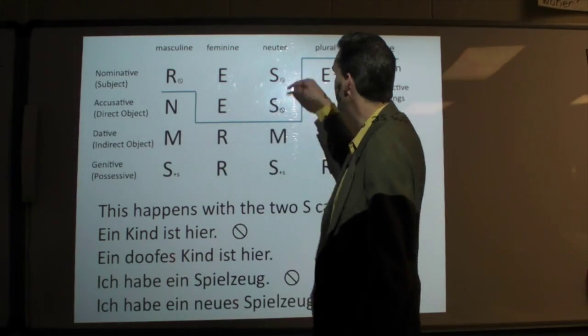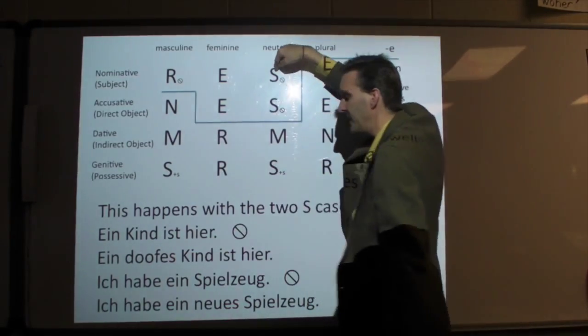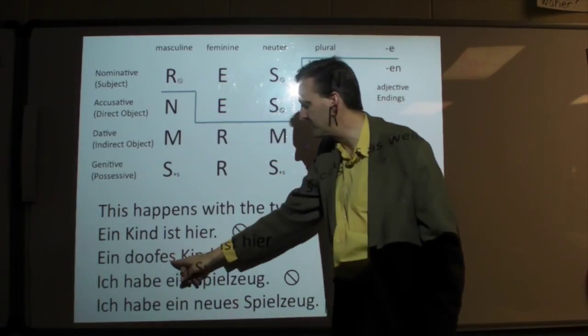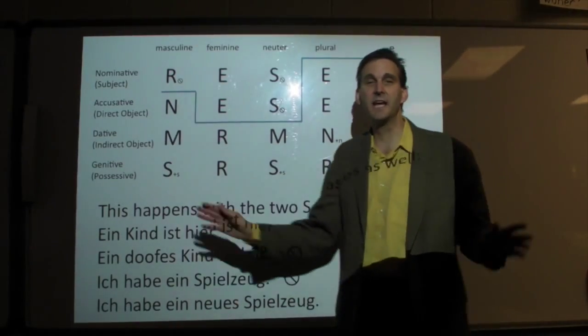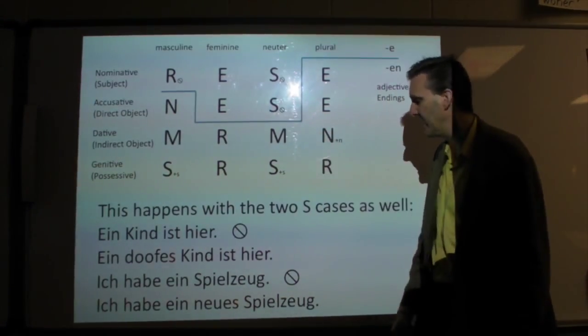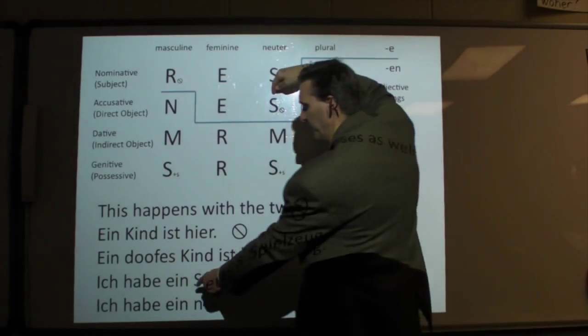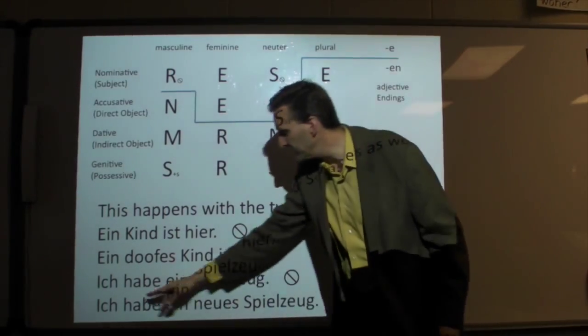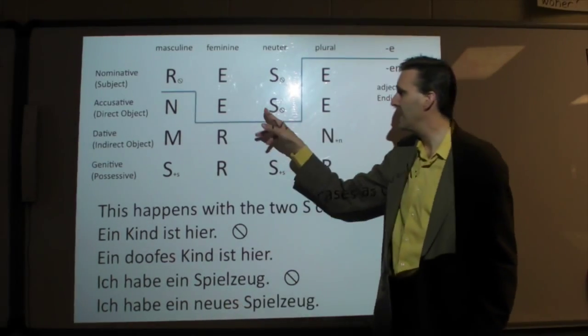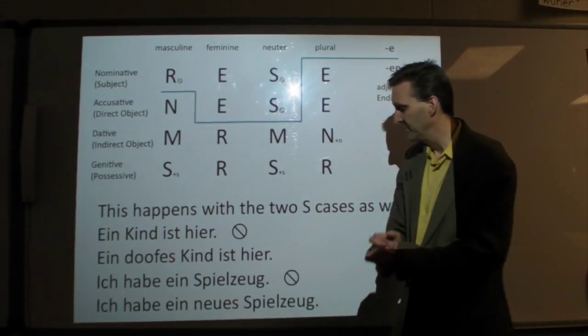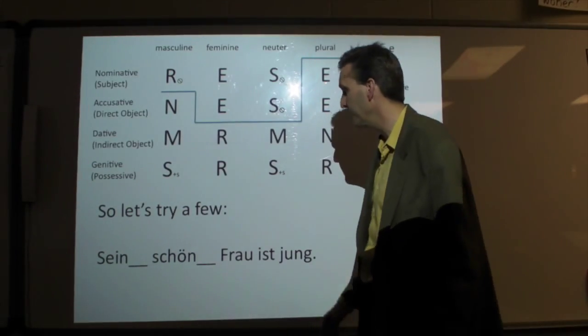Same thing with these ones. If I'm up here, Ein Kind ist hier, and I orphaned the S, and I want to say a silly kid is here. I pick out that S, once again, I don't—this kid is here, and I ignore the crooked line rule. Instead, we're just adopting that poor little orphaned S. Or, ich habe ein Spielzeug, that's this S, so I orphaned that S right here. And, if I say, ich habe ein Neues Spielzeug, the word Neue, this adjective, has adopted this S right here. So, that's how it works. You're actually learning quite a bit of grammar already here.